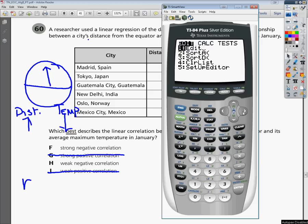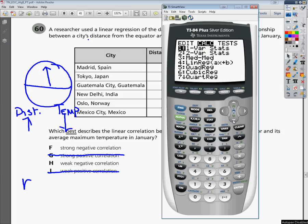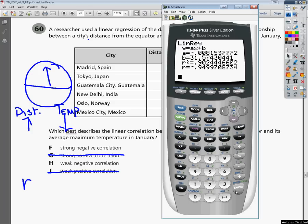Now we're going to go into the stat menu and I'm going to do a calculation. What I'm going to do is a linear regression because that's what they said the researcher did. Hit enter there, hit it again, and as you can see, I get all this information about the two sets of data. So what I'm really looking at is this R value.